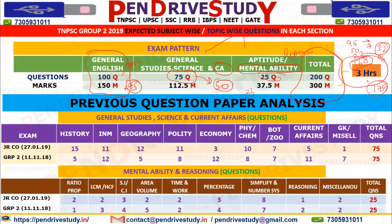Next, let's do a previous question proper analysis. Looking at recent exams: Group 2 was held on 11 November 2018, and also the Junior Inspector in Cooperative Society exam.